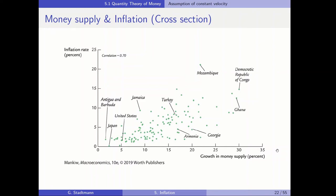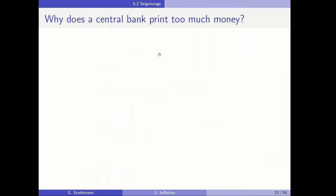Welcome back to class. In the first part of this lecture we have seen that a high growth rate in money supply leads to inflation. So the big question is: when we know this kind of stuff, when we have this kind of knowledge, why is it the case that the central bank prints too much money?